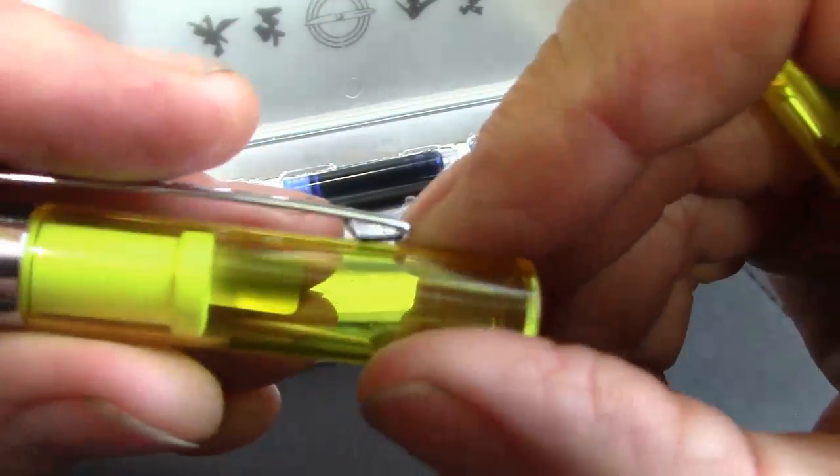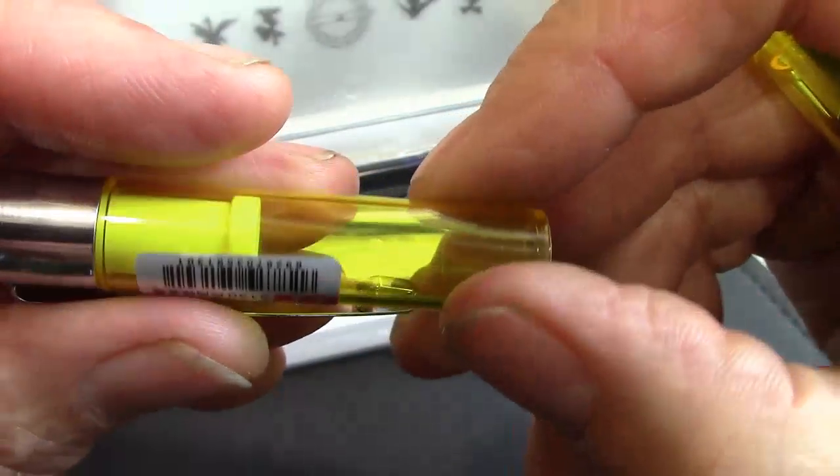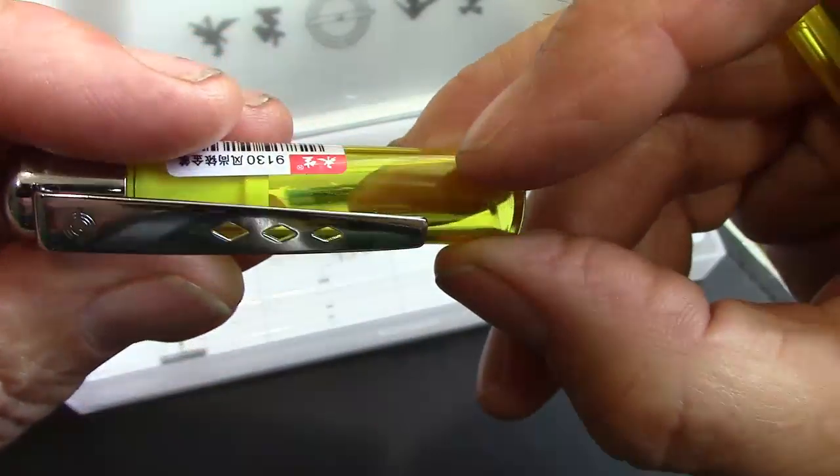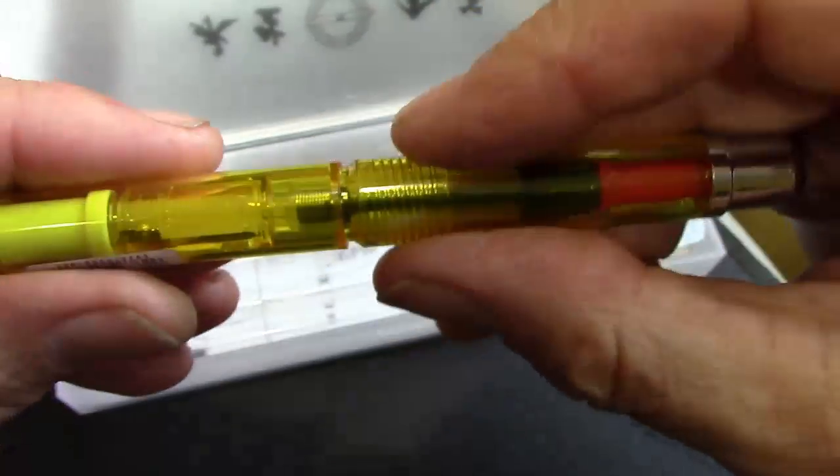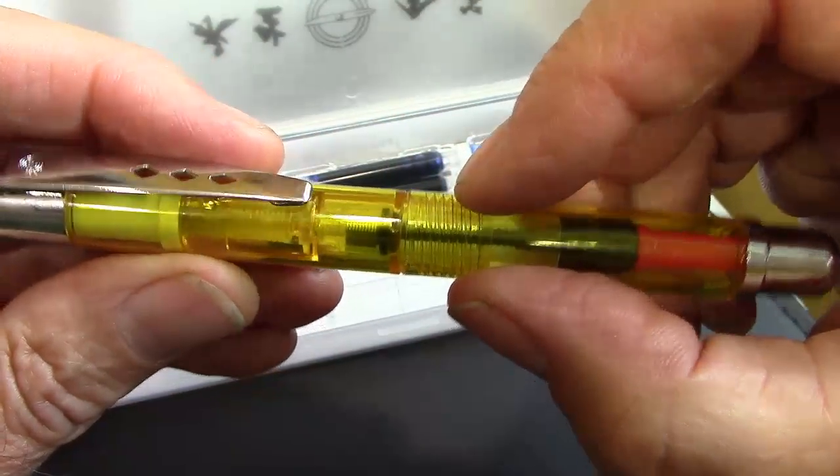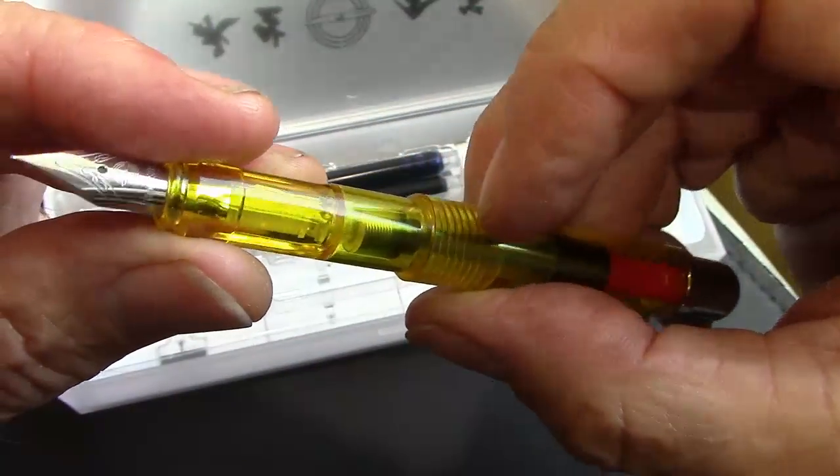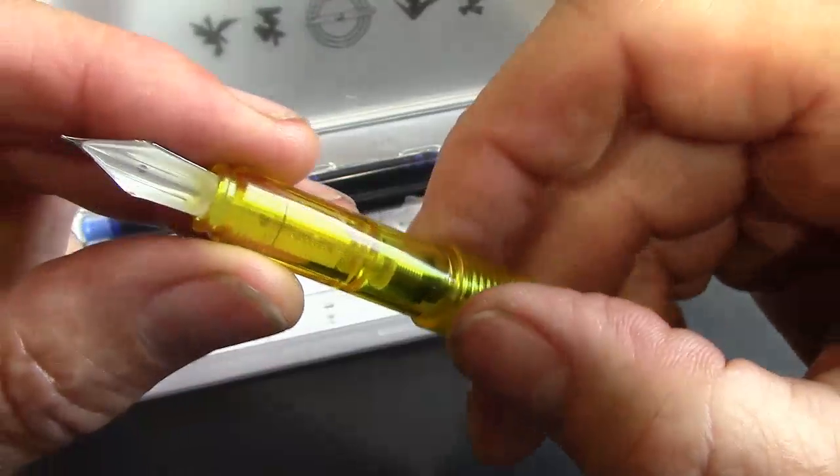I have a white liner in the cap. So that would be nice if that was clear. So then when you cap the pen you can see the nib. But it is nice that the section is clear, at least it's transparent yellow and the feed is clear as you can see.